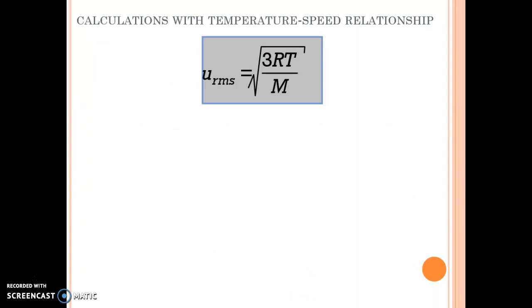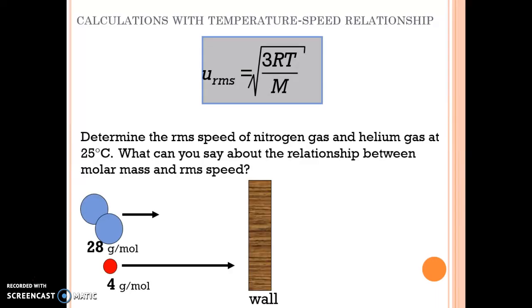Let's take a look at some calculations we use in this equation. So if I have two gases at the same temperature, so same average kinetic energy, but what are their root mean square speeds going to be? So nitrogen has a molar mass of 28. Helium has a molar mass of four.